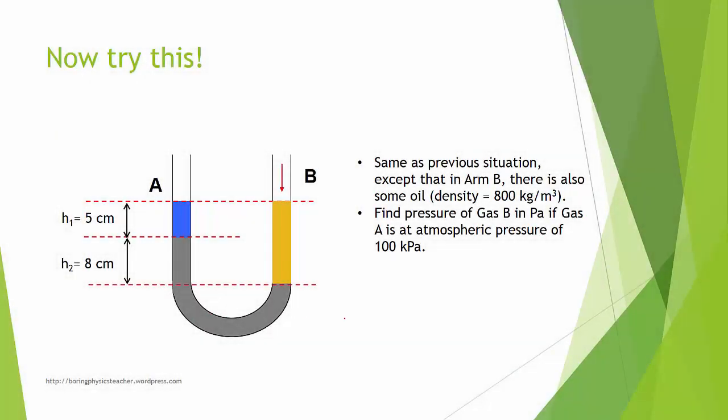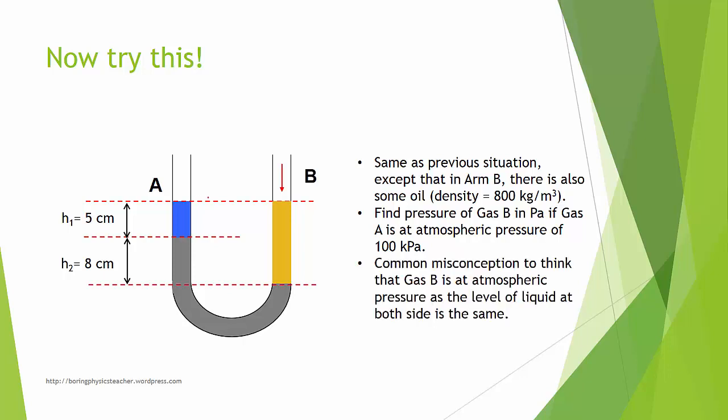Okay, now the solution to the question. You're supposed to find the pressure of gas B if gas A is at atmospheric pressure of 100 kilopascals. A common misconception is to think that gas B is at atmospheric pressure simply because the level of liquid here and here is the same.